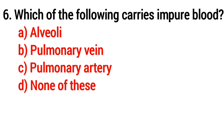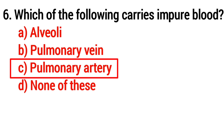Question 6: Which of the following carries impure blood? The answer is Option C: pulmonary artery.